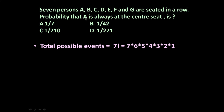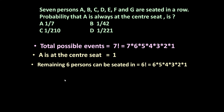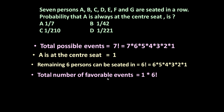What we want: A must be at the center seat. A is at the center seat — in how many ways can A sit? There is 1 seat and 1 person, so A can sit in only 1 way. But the remaining 6 persons can be seated in different positions, so remaining 6 persons can be seated in factorial 6 ways, that is 6 × 5 × 4 × 3 × 2 × 1. Total number of favorable events is 1 × factorial 6.